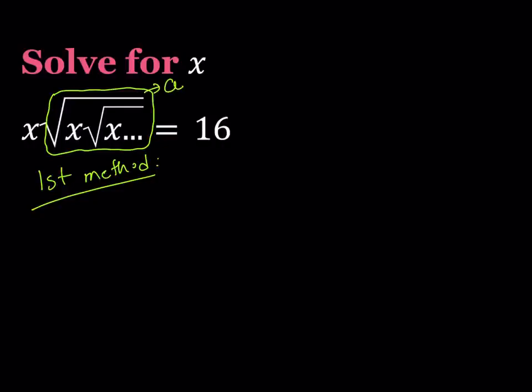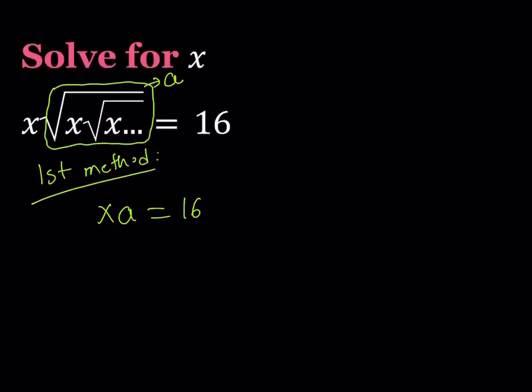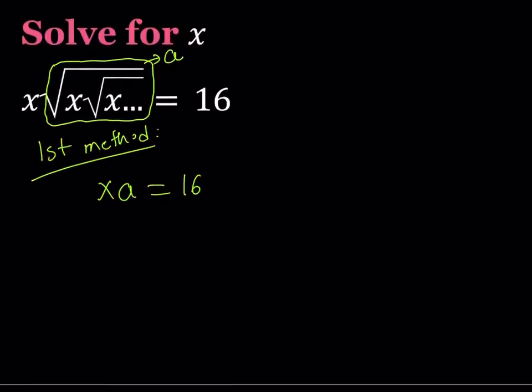So now we get an equation from here, right? We get xa equals 16. It's kind of like the product of two numbers is equal to 16. So I do need another equation so I can make it a system of two equations, right? Then I can solve for each variable. And where does that come from? Well, it automatically gives us the assumption, or the substitution gives us this equation, that the radical thing, the square root of x times the square root of x times the square root of x dot dot dot equals a. So this is our system of equations, and we're going to solve for x.